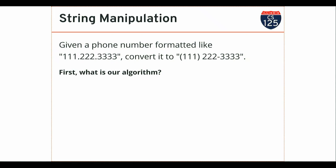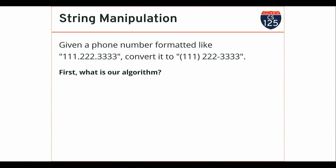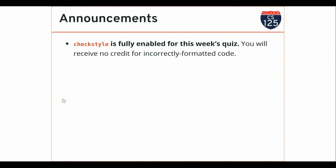Finally, an important announcement about this week's quiz. We've been training you how to write Java code the way we've decided is correct, using checkstyle. Starting today, if you submit code on the quiz that doesn't pass the checkstyle test, it will be marked totally wrong — no partial credit anymore. You get the same feedback as on the homework, but it won't pass unless it meets the checkstyle requirements. See you on Wednesday, and enjoy tomorrow's lab.